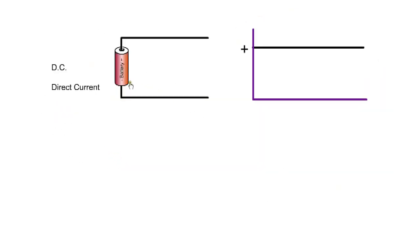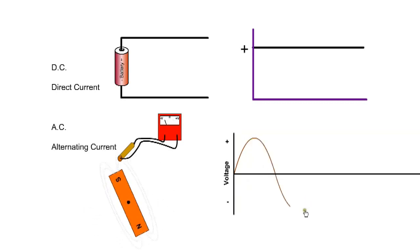The current flow from a battery is DC, direct current. If we look at the voltage, it is constant. If we look at the voltage waveform from a generator, it is changing from positive to negative. If this alternating voltage waveform is applied to a circuit, it will result in an alternating current flow.